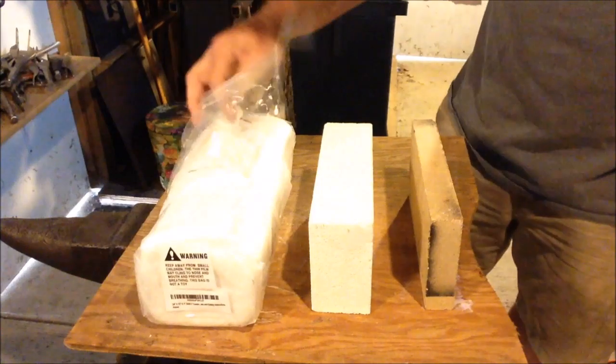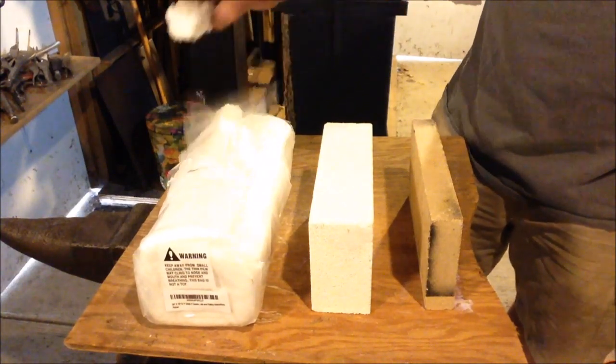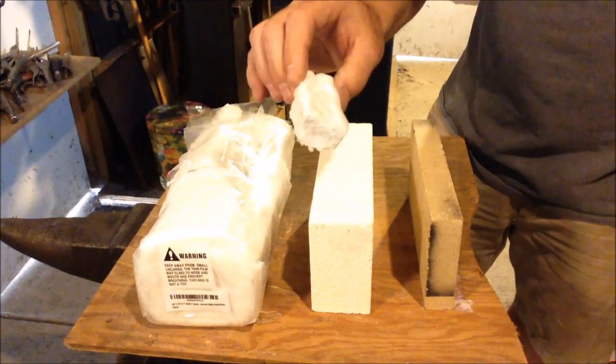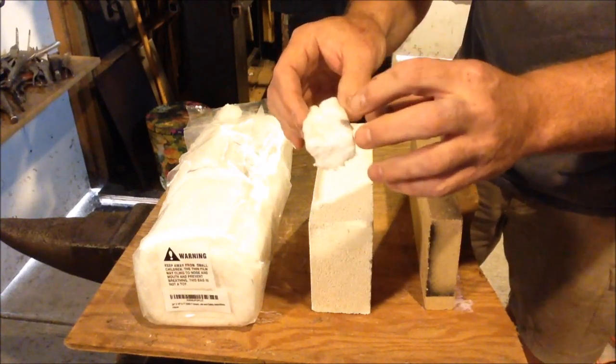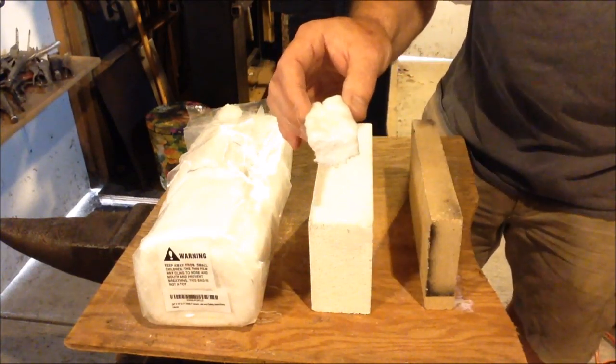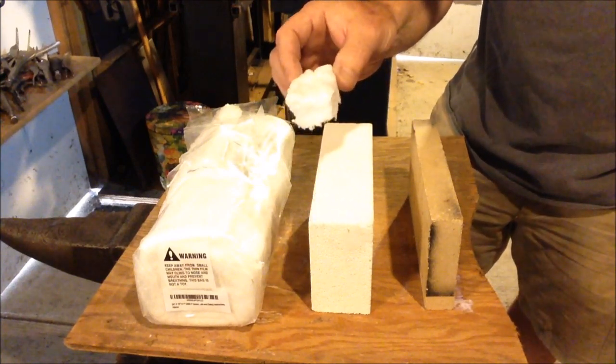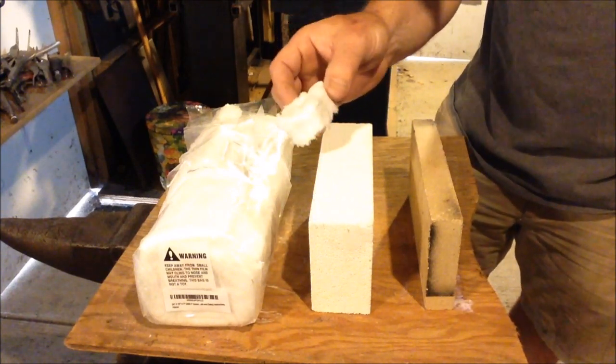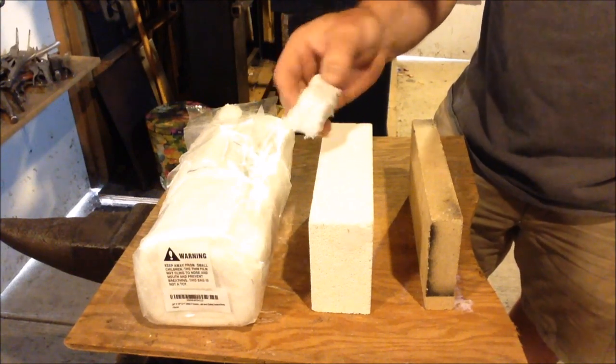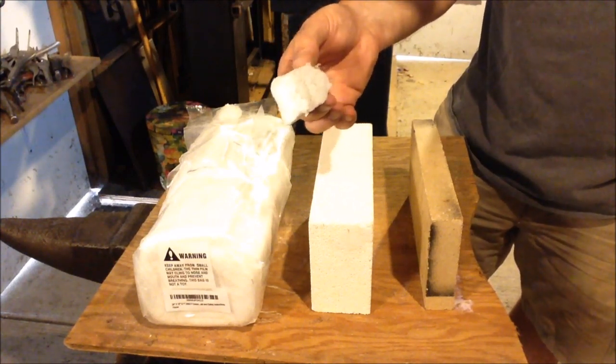These ceramic fire bricks are six cents per cubic inch. They're about the same exact size here but they're double the width, about two and a half inches wide. So yes, six dollars each but it's a little bit more, not a lot more than these hard fire bricks.